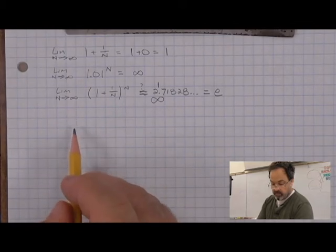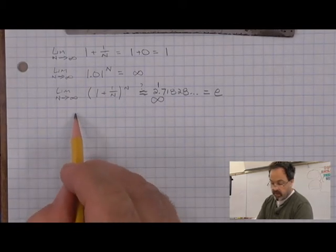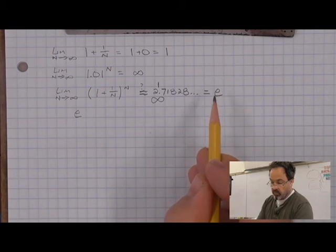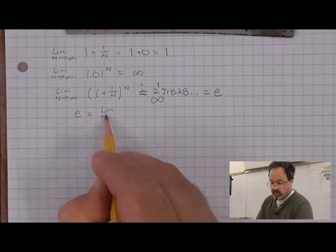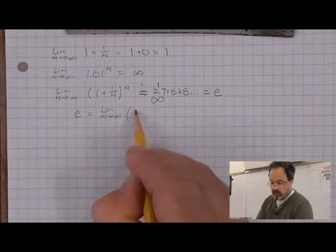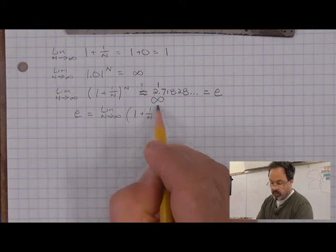e comes up in mathematics so much that it has its own symbol like pi to stand for it. And e is defined as the limit as n goes to infinity of 1 plus 1 over n all to the nth.